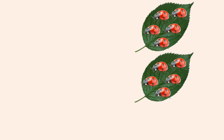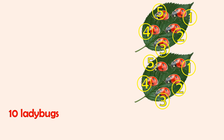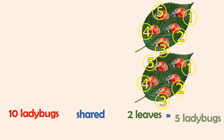Now let's count how many ladybugs there are on each leaf: one, two, three, four, five. So ten ladybugs shared equally between two leaves equals five ladybugs.